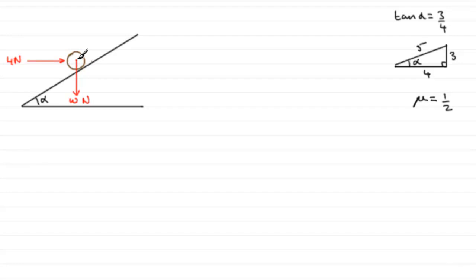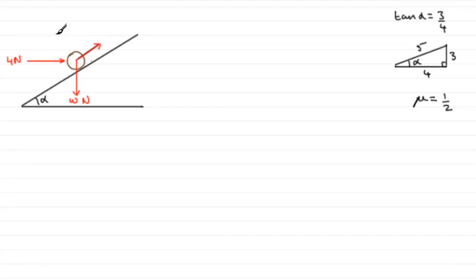We need to find the normal reaction between the particle and the plane — show that it's 20 Newtons — and also find the weight W. Because the particle is on the point of sliding down the plane, I'd want to mark a force up the plane opposing motion. Because it's on the point of slipping, it will have reached limiting friction, mu R, where R is the normal reaction.